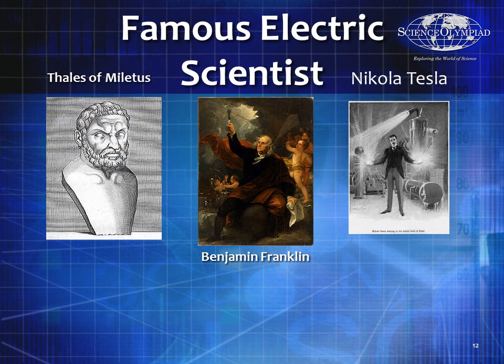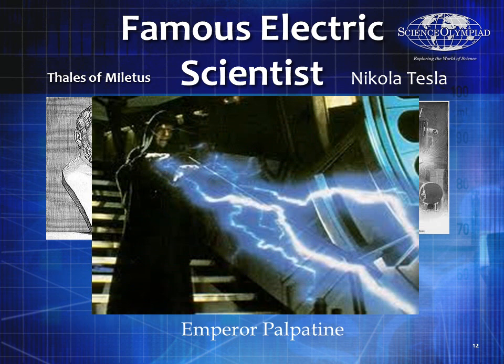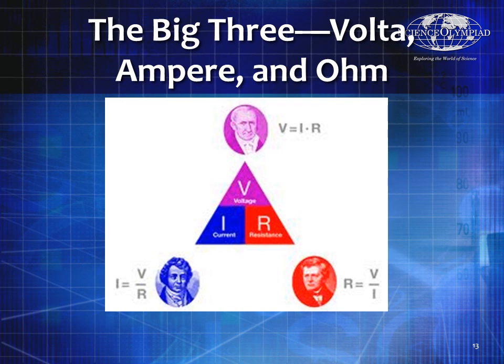Some famous electrical scientists include Thales of Miletus, Ben Franklin, and Nikola Tesla. You'll need to know several scientists, and I recommend having an entire binder section dedicated to them. The big three are Volta, Ampere, and Ohm, because they all combine for Ohm's Law: V equals IR. Using simple algebra you can also solve I equals V divided by R, or R equals V divided by I. These are the most important formulas in CircuitLab, so use them early and often until you never have to look them up.